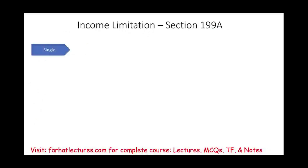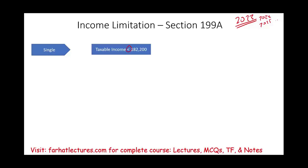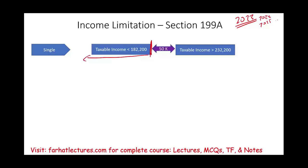Let's discuss the income limitation. For a single individual with taxable income less than $182,200 — using 2023 figures — up to $232,200, there is a $50,000 range. As long as your taxable income is below $182,200, generally speaking you'll get a full 20% deduction. Once your taxable income enters the range of $182,200 to $232,200, your deduction will be limited and you will start to lose some of it.